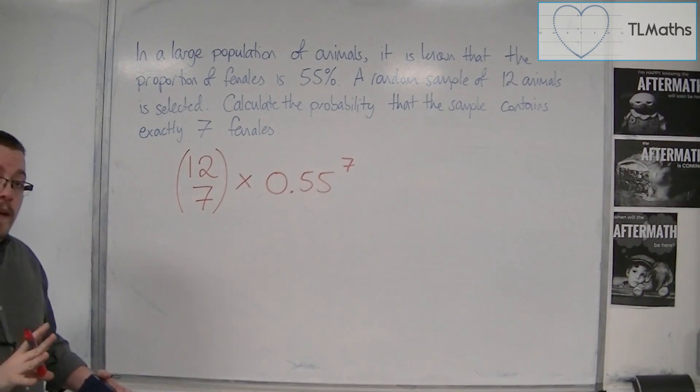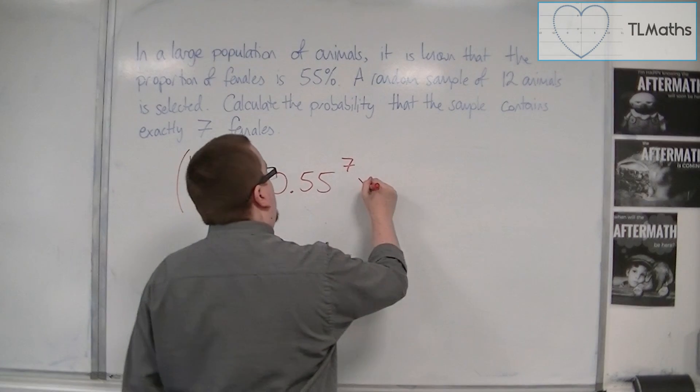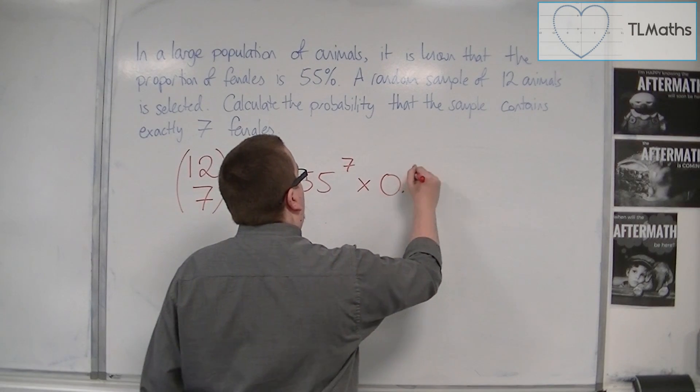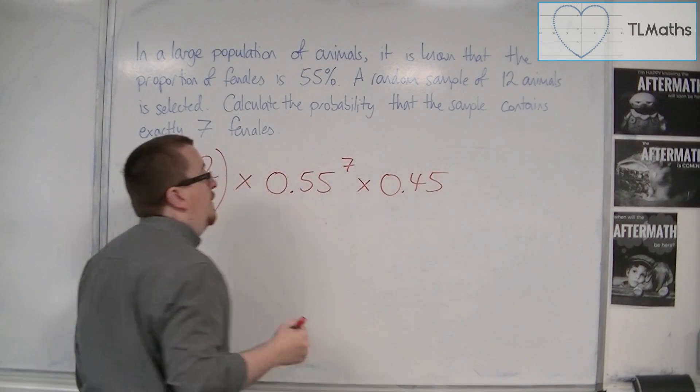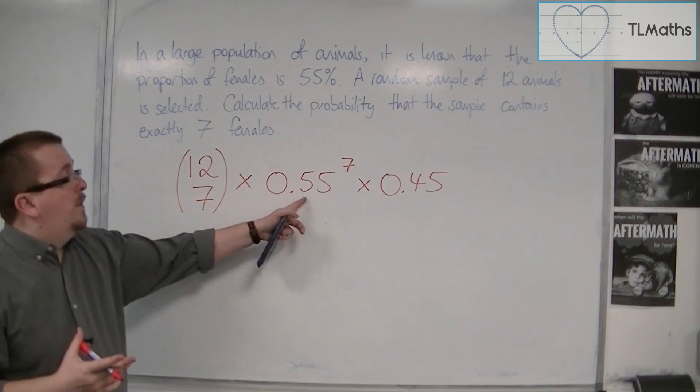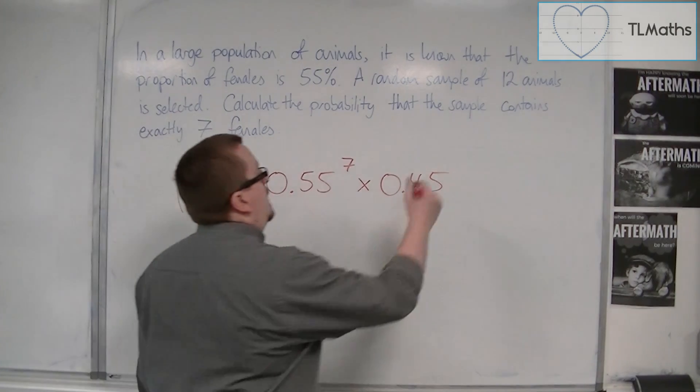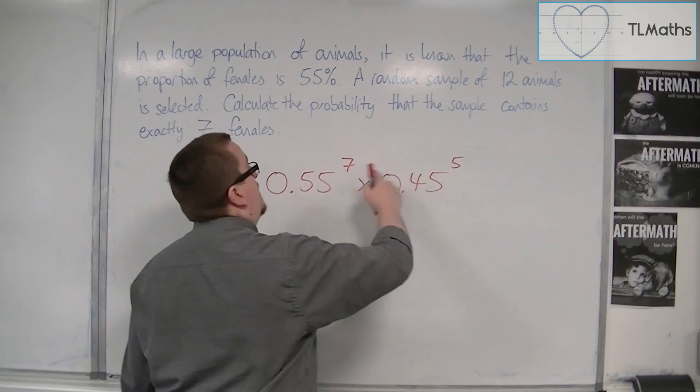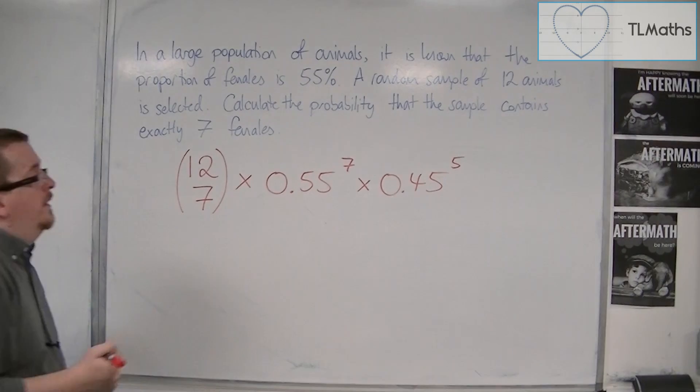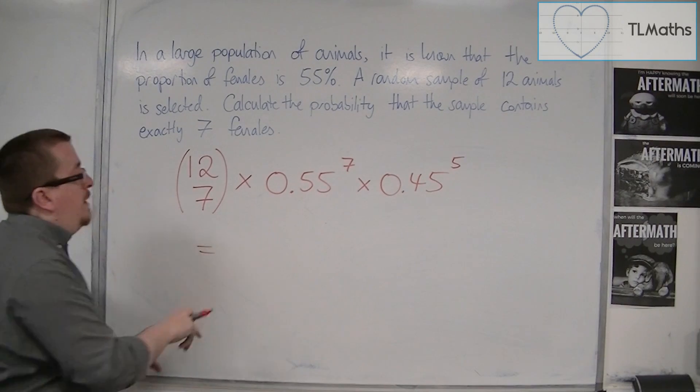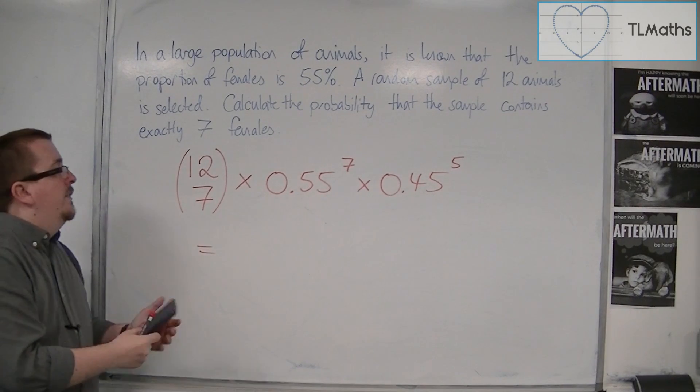So subsequently, the probability of picking a male is 0.45, or 1 minus P, so 1 minus 0.55. And that's going to happen 5 times, because if I get 7 females, there must be 5 males. And so I need to multiply these 3 things together.